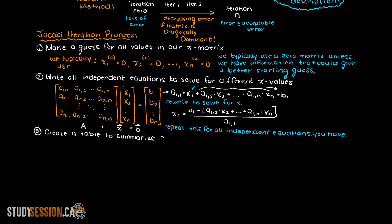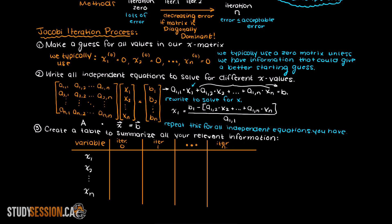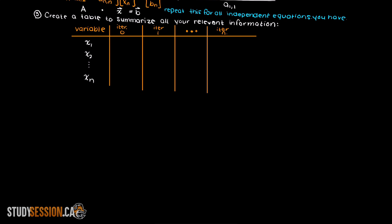Number 3, so once we have rewritten our system of equations, it is often wise at this point to create a table to summarize all of your relevant information. This is how I would recommend making your table, however, as long as your table has all the important information on it and you understand it, that is all that matters.